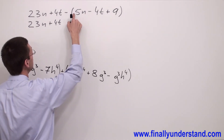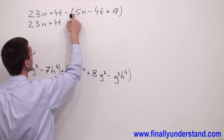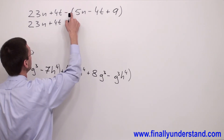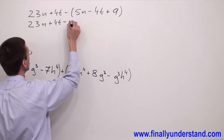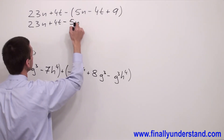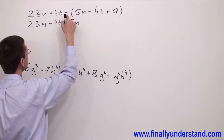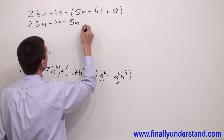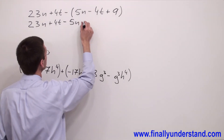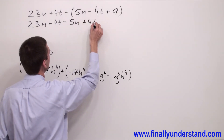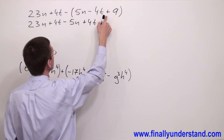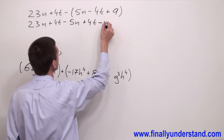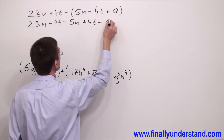Remember, anytime there is no sign, there is always a positive sign. So negative times positive gives me negative 5n, negative times negative is positive, giving plus 4t. Negative times positive gives me negative 9.